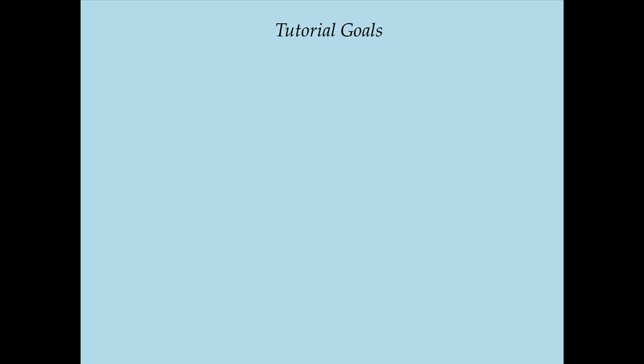I have three goals in this tutorial. The first is to show you some fundamental analogies between signals in mechanical and electrical systems. By signals, I generically mean any quantity that is a variable with respect to time — velocity, force, current, voltage — these are all signals. I want to explore the analogies between signals in a mechanical system and signals in an electrical system.